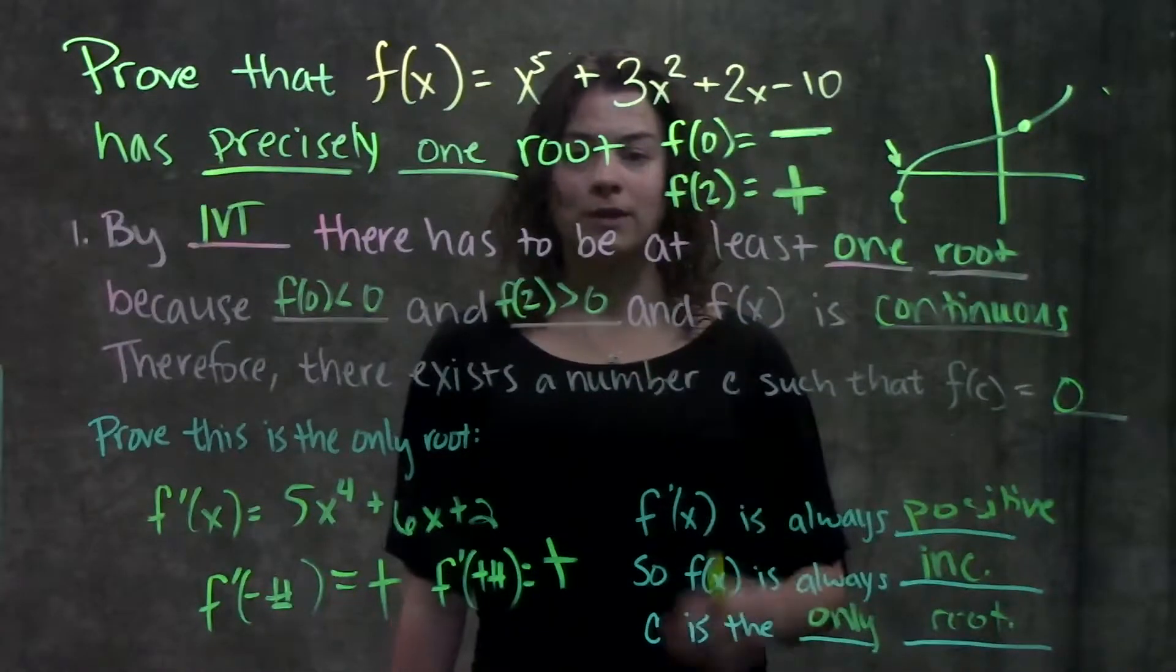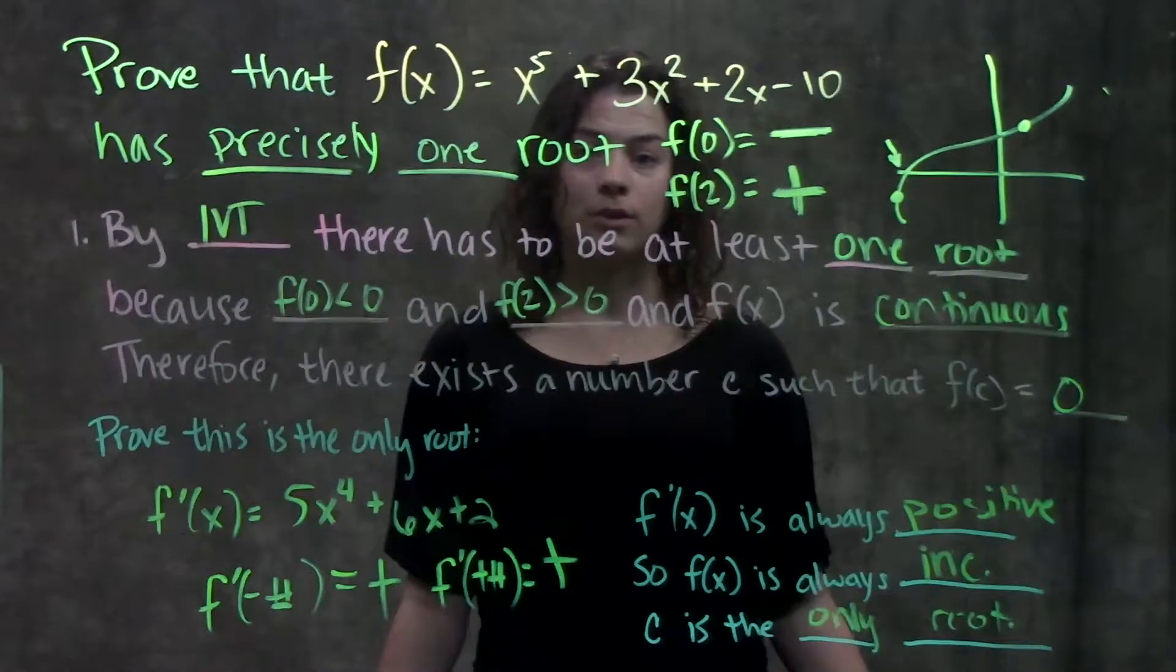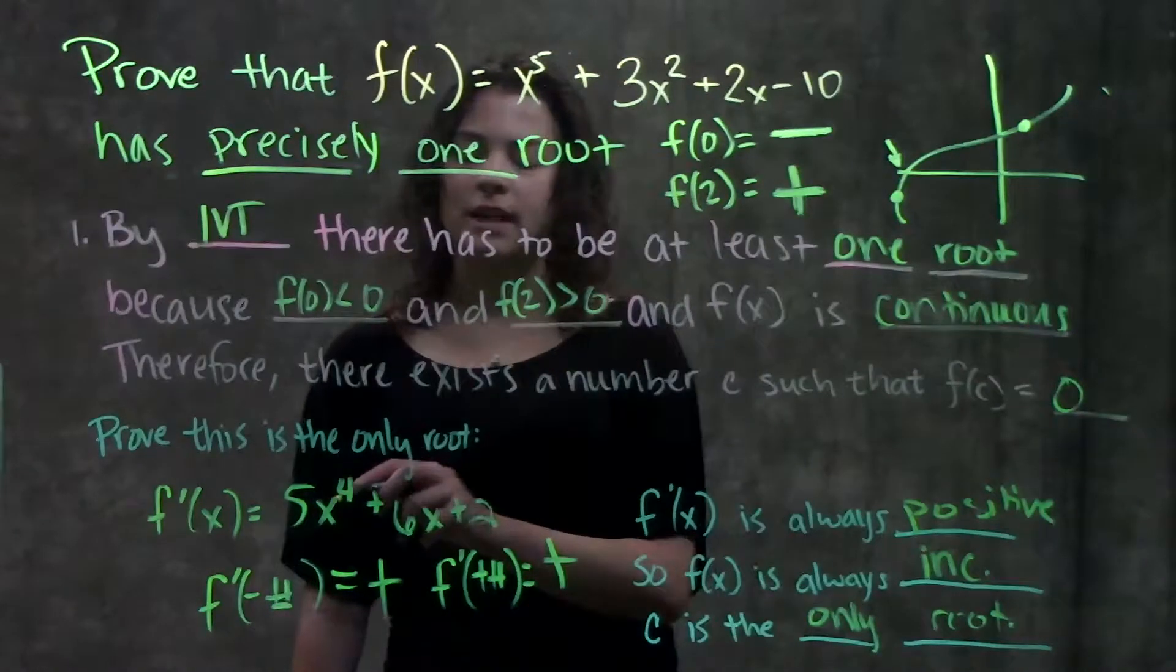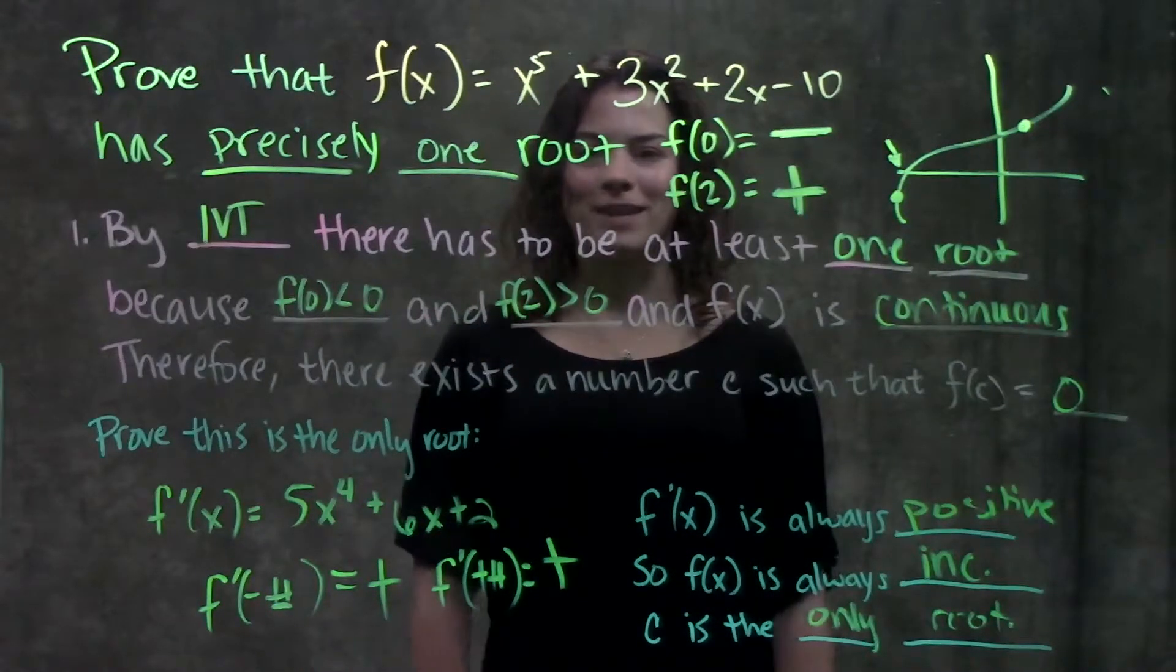And that's how you prove this problem. Step one we had to prove that there was at least one root in this function, and step two we proved that it was the only root by checking the sign of the derivative. Other than that, that's it.